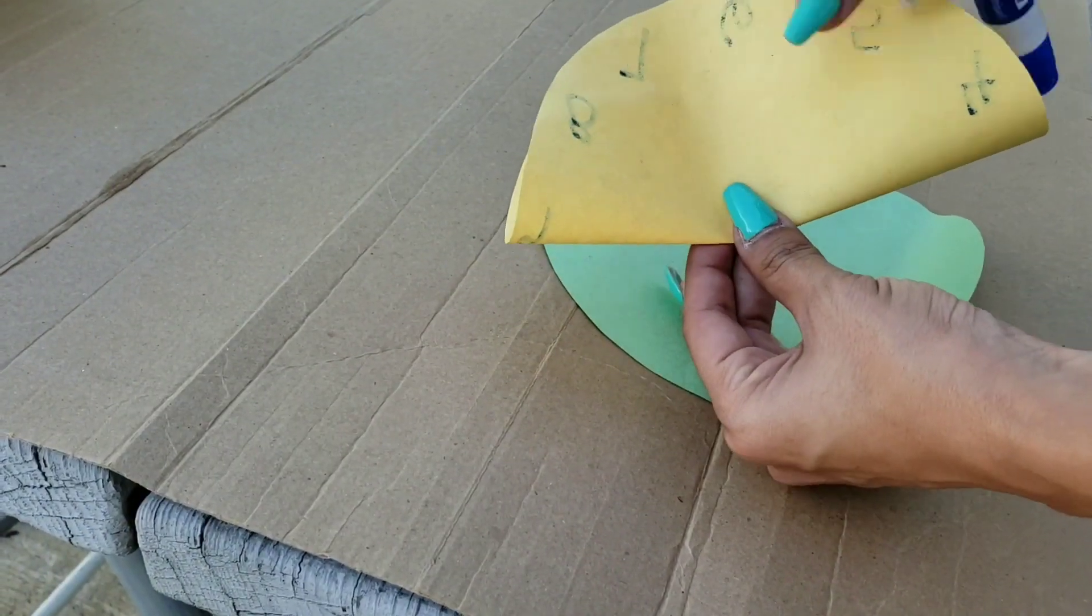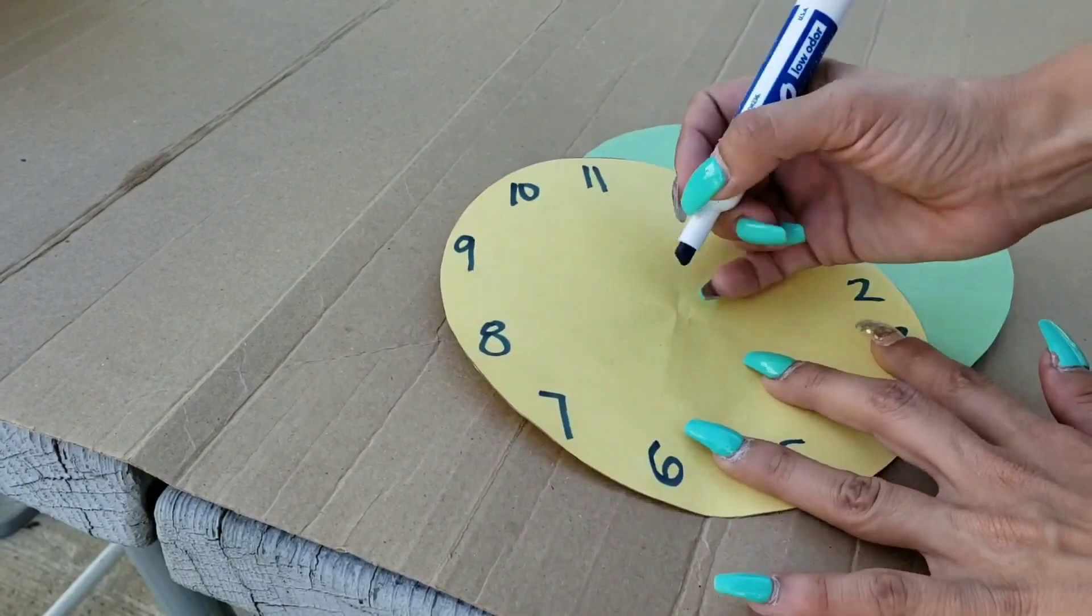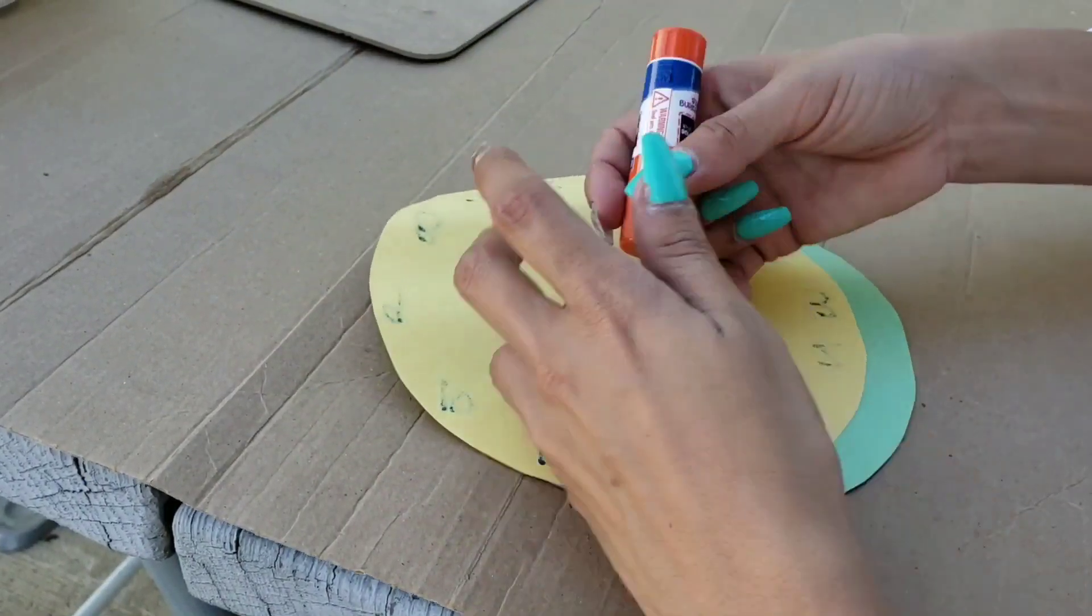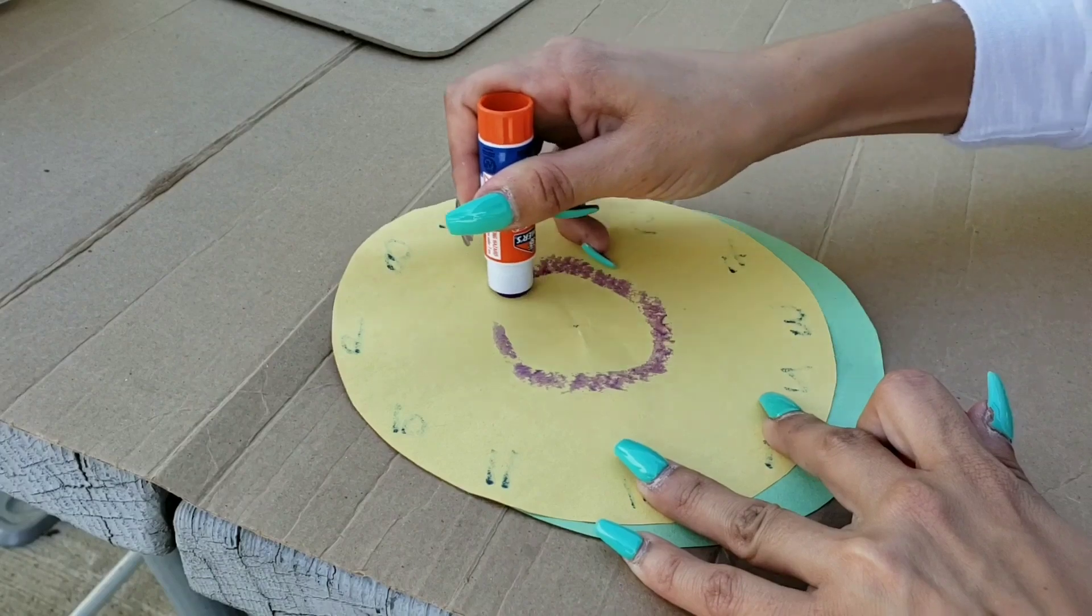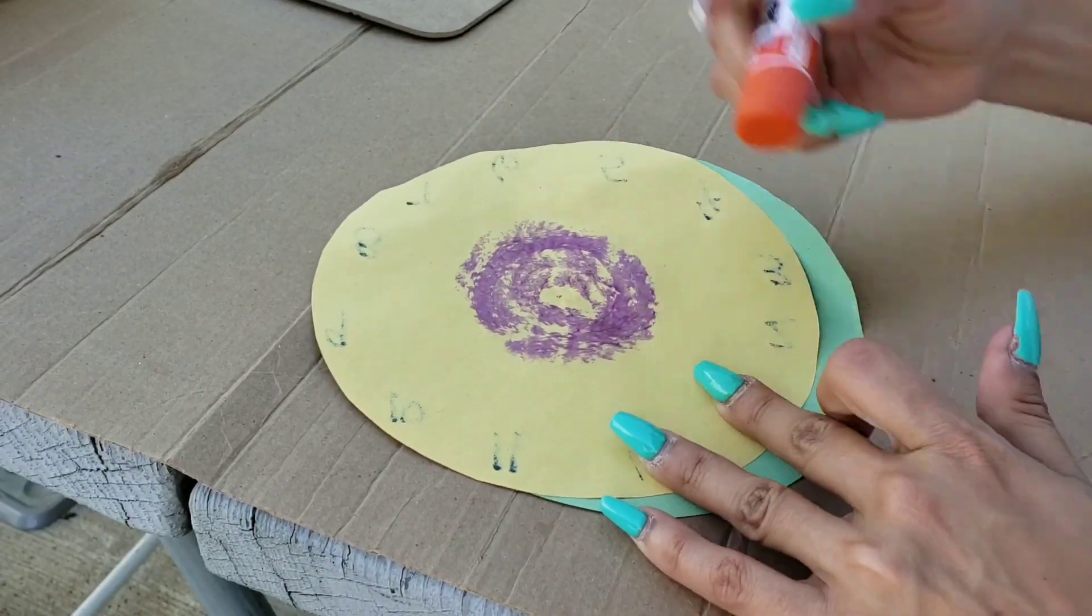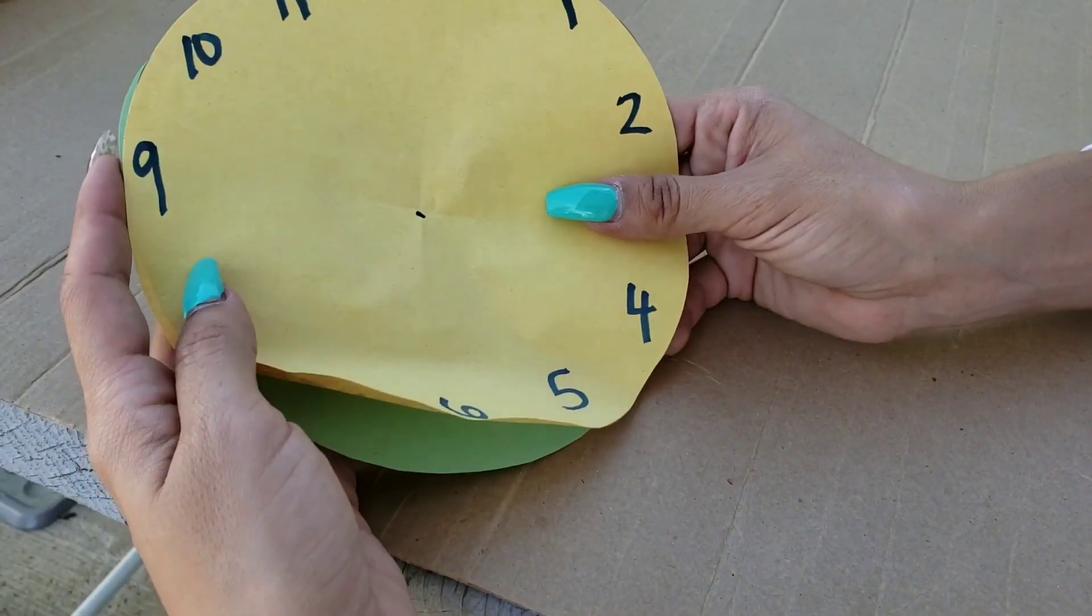Next step you can fold the circle so you can find the center. Now glue just the center of the circle to the other paper.